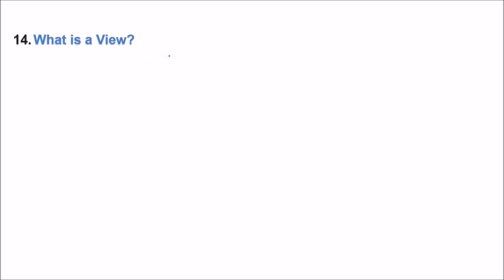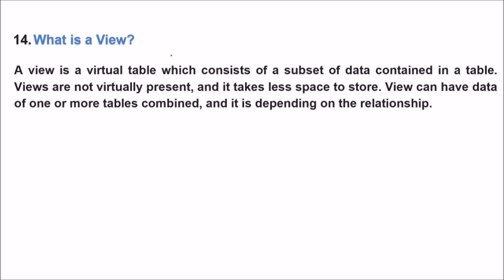What is a view? A view is a virtual table which consists of subsets of data contained in a table. Views are not physically stored — they take less space. A view can have data from one or more tables combined, depending on the relationship. So a view is not present in actual storage.